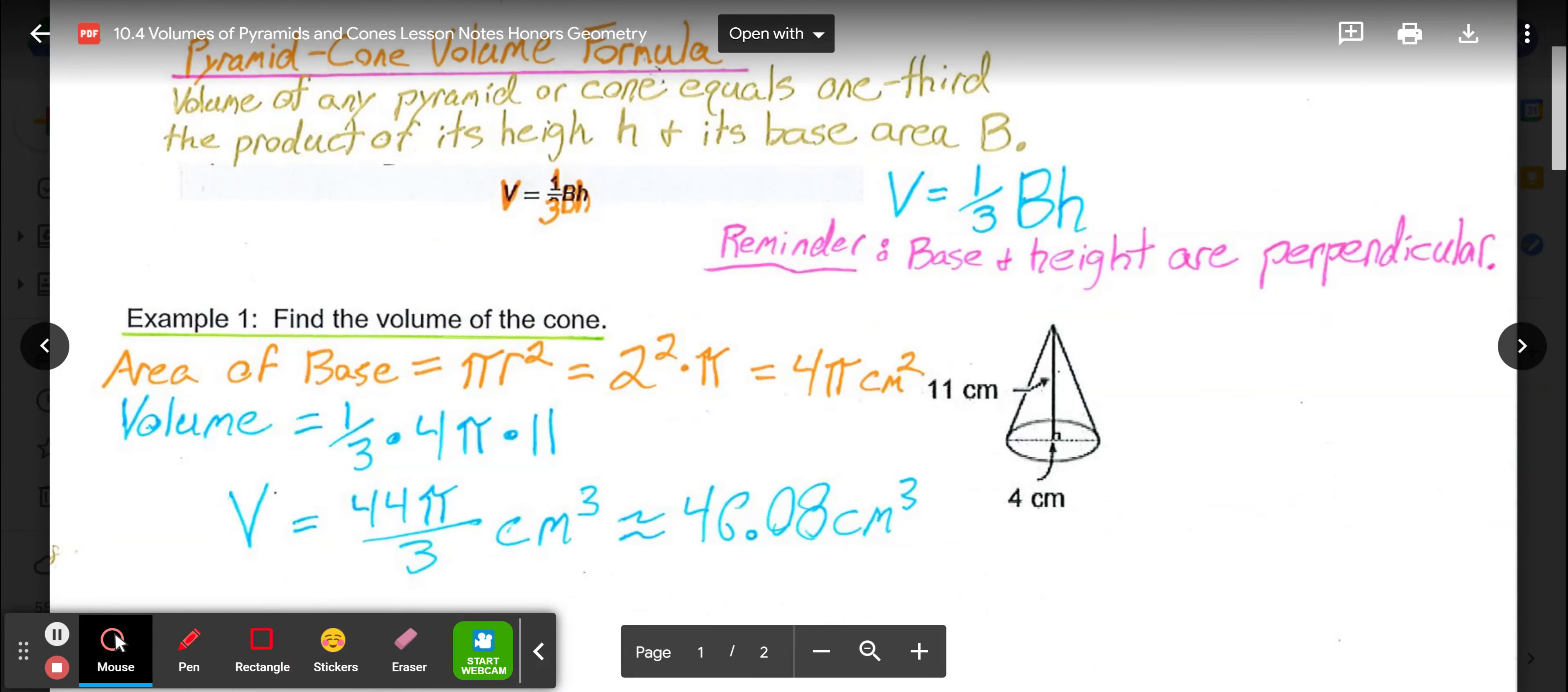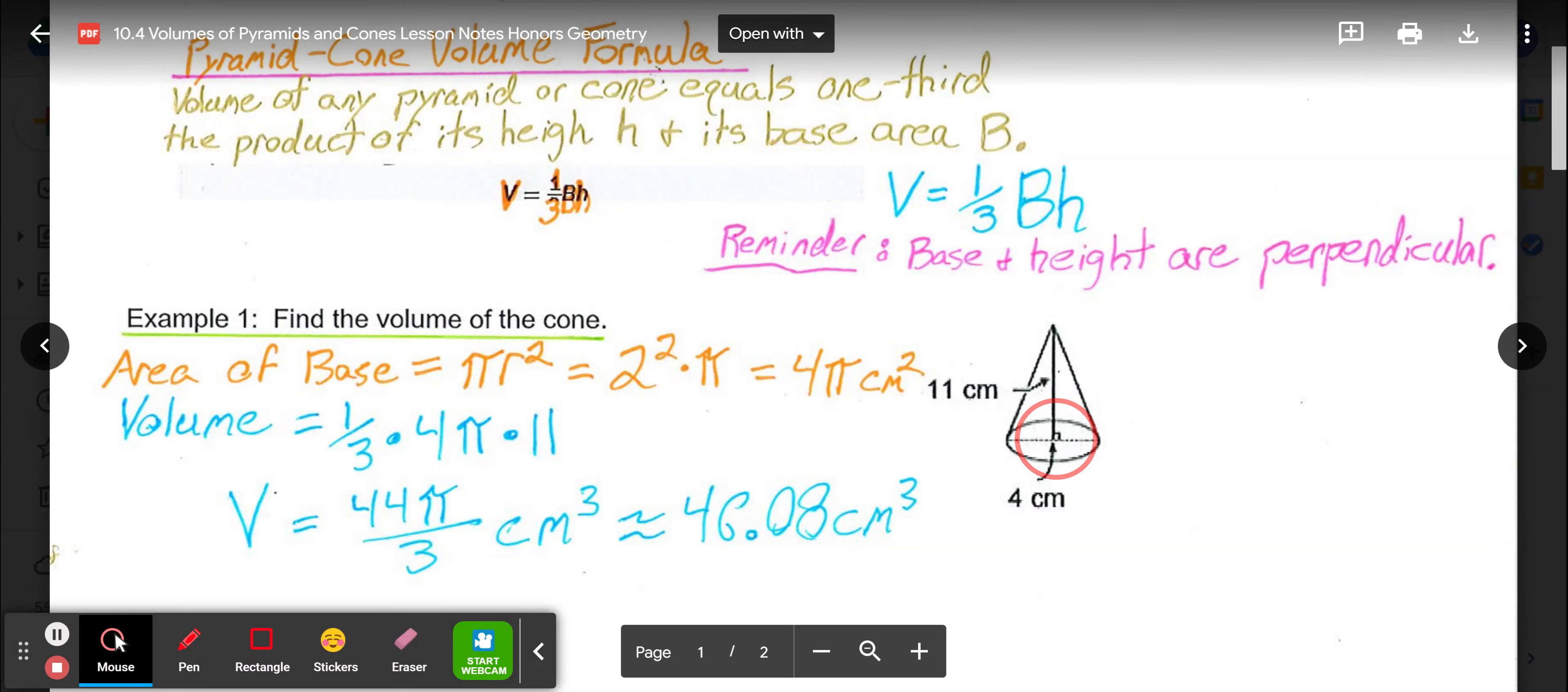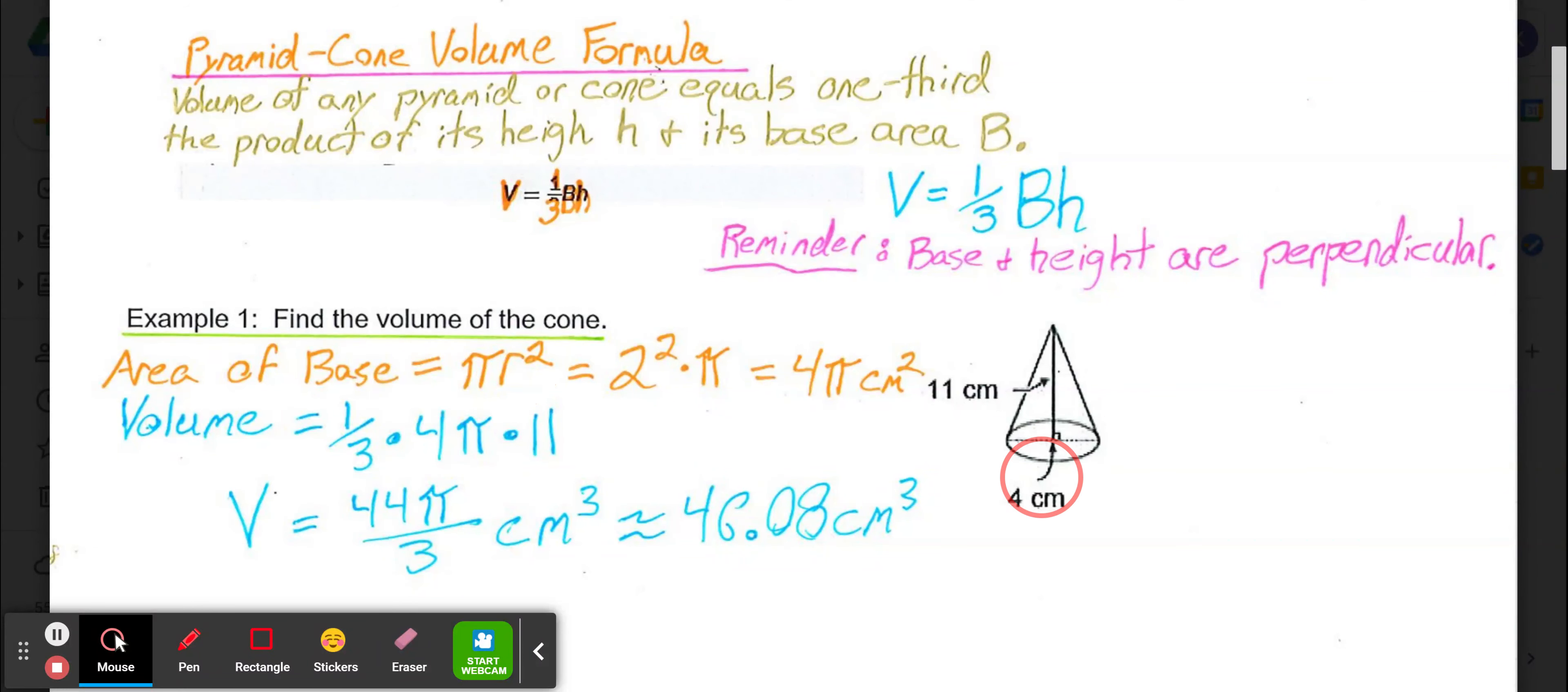Looking at example 1, we're going to apply our volume formula to our cone here with a diameter of 4. The area of the base is π times radius squared, area of a circle. If our diameter was 4 centimeters, we know our radius was 2 centimeters. So our area would be 2 squared times π, or 4π centimeters squared. I'm not going to approximate that yet until we get to our final volume, so I'm going to leave it as 4π.